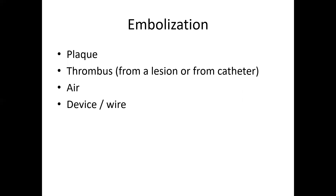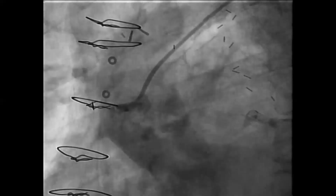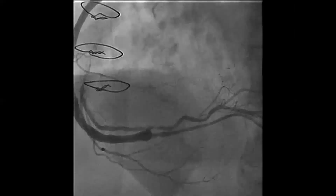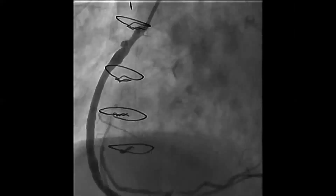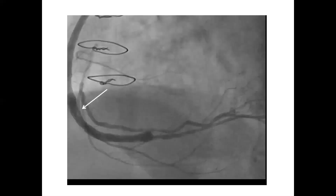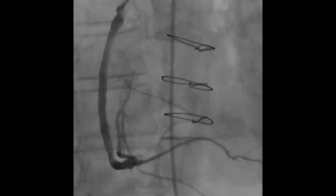Embolization can happen due to plaque embolization, thrombus from a lesion or stent thrombosis as seen in the previous case, or from the catheter itself. Air embolism has been described and is related to air getting into the system. Device or wire embolization due to equipment malfunction has also been described. This is a case where angiography of a vein graft was attempted. The tip of the catheter was lodged in a proximal plaque, and you can see a piece of debris from that lesion traveling down the vein graft and lodging into the PLV branch, causing significant compromise of flow in that branch.